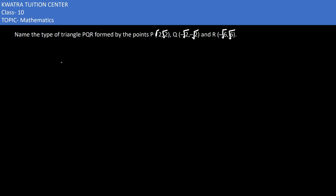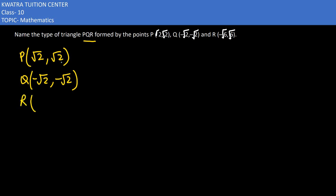In the next part, we have to name the type of triangle PQR formed by the points. P is given as (√2, √2), Q is given as (-√2, -√2), and R is given as (-√6, √6). Now what do we have to find out?